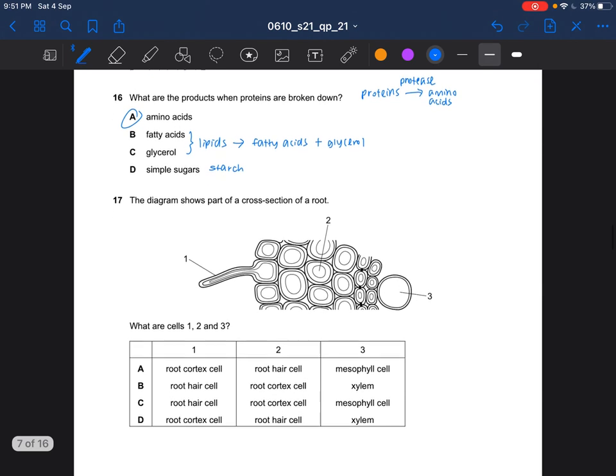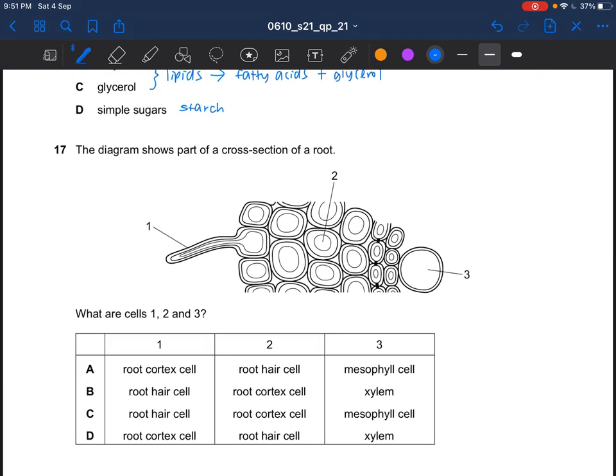Next question. The diagram shows part of a cross section of a root. The first one would be the root hairs since it is elongated. So it can't be A, it can't be D. And 3 would be the xylem. It's extremely big. Then 2 with the root cortex cell. So the answer would be B.